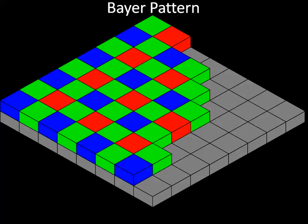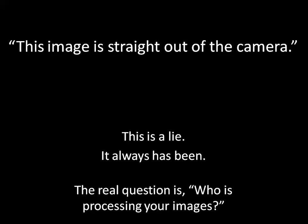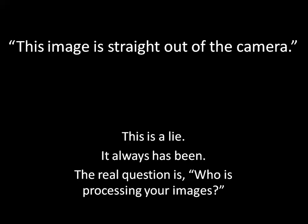Because each pixel only gets red, green, or blue data, and all three colors are required for each pixel, a process called linear demosaicing tries to interpret what the values for the other two colors for each sensual should be from the surrounding sensuals. Foveon X3 sensors use a three-layer pattern, like film, with RGB layers on each sensual. I see this online all the time: 'This image is straight out of the camera.' This is a lie — it always has been. The real question is, who is processing your images? All digital cameras create RAW files.